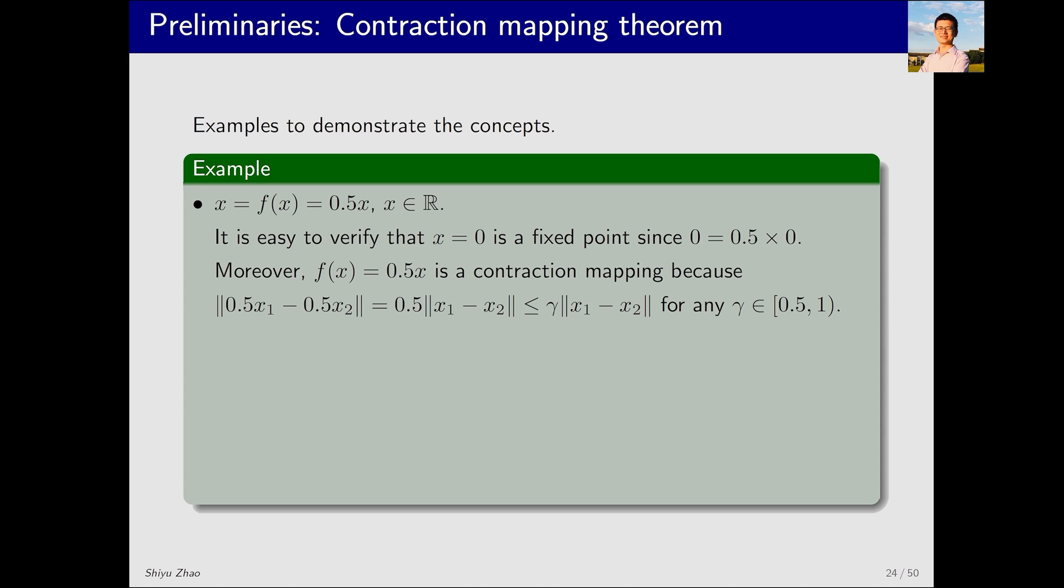Let's look at two simple examples to better understand the concept of fixed point and contraction mapping. Consider the equation x equals f(x), where f(x) is 0.5x, with x being a scalar. It's easy to verify that 0 equals 0.5 times 0. Therefore, 0 is a fixed point. Is f(x) equal to 0.5x a contraction mapping? The answer is yes.